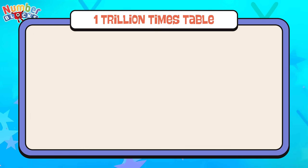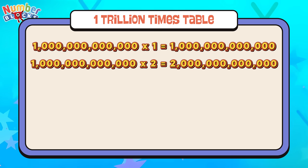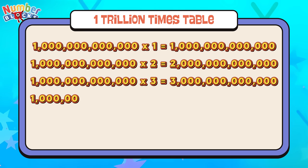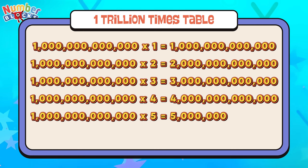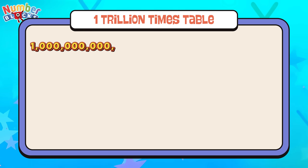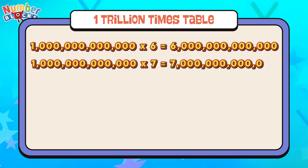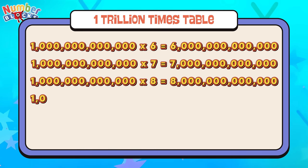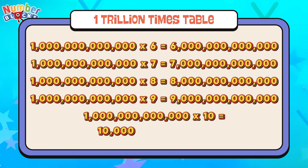Let's check out the one trillion times table again! One trillion times one is equals to one trillion. One trillion times two is equals to two trillion. One trillion times three is equals to three trillion. One trillion times four is equals to four trillion. One trillion times five is equals to five trillion. One trillion times six is equals to six trillion. One trillion times seven is equals to seven trillion. One trillion times eight is equals to eight trillion. One trillion times nine is equals to nine trillion. One trillion times ten is equals to ten trillion.